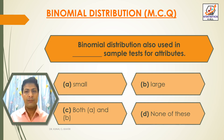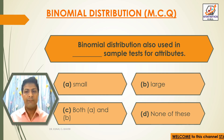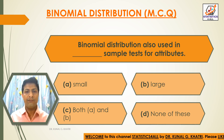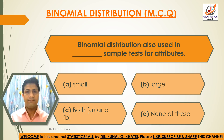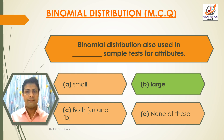Next question: Binomial distribution is also used in dash sample test for attributes. Option A: Small. Option B: Large. Option C: Both A and B. Option D: None of these. The answer is option B — Large. Binomial distribution is also used in large sample test for attributes.